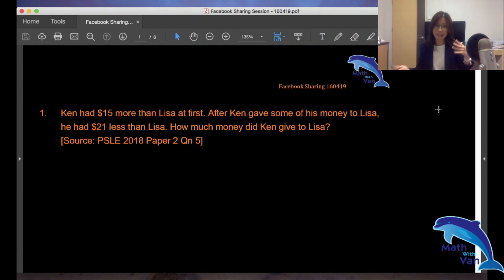Although this is a two-mark question, you should not be making long complicated algebraic expressions and equations. Since we are told of the relationship both at first and in the end, it's always easier to work from the beginning. So I will draw a longer model for Ken.